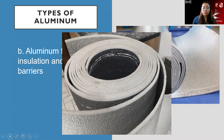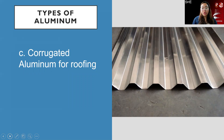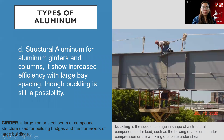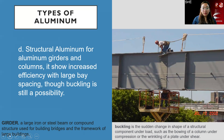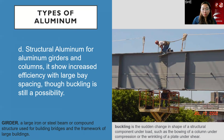Corrugated aluminum is also used for roofing — it has a corrugated design. Aluminum can also be used structurally for girders and columns, increasing efficiency especially for large bays with wide column spacing, though buckling is still a possibility. A girder is simply a steel beam or compound structure used for building bridges and the framework of large buildings. Buckling is the sudden change in shape of a structural component under load, such as bowing of a column.